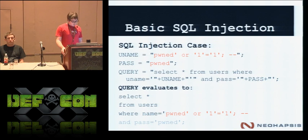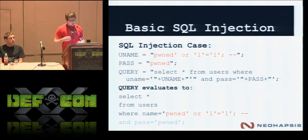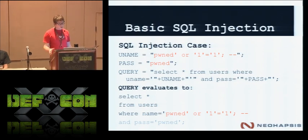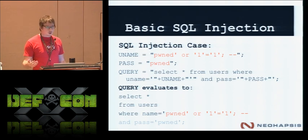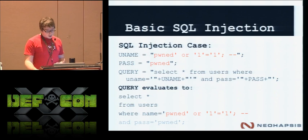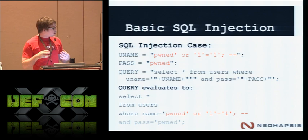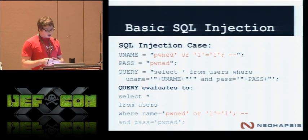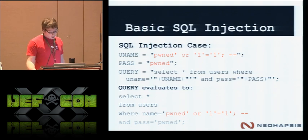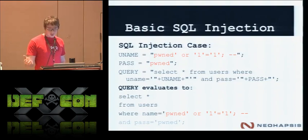What does SQL injection look like? We're trying to break out of that query syntax. When we break out of that query statement, we can construct our own query on top of what the application is supposed to execute. We insert a value — imagine a web request passing parameters. We pass in 'pwned tick or 1 equals 1.' That tick symbol escapes out of the query. Since 1=1 always evaluates to true, we basically get access to the system.